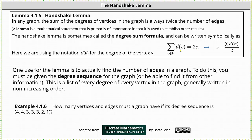We can also solve this equation for e by dividing both sides by two and state e, the number of edges, is equal to the sum of all the degrees of the vertices divided by two.